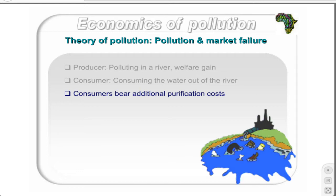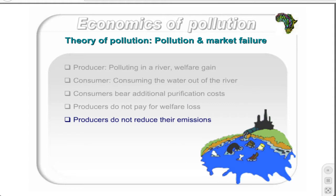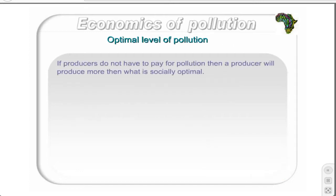These costs cause a welfare loss to the households. If the paper mill does not have to pay for the pollution it is discharging, the producer will probably ignore the welfare loss it is causing to the households. Producers have no incentive to reduce pollution for which they do not pay. In this example, there is market failure because the paper mills do not have to pay for the pollution they are causing.